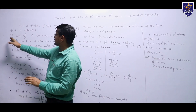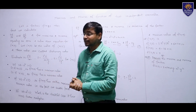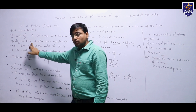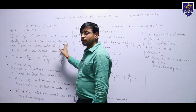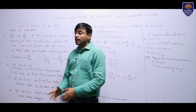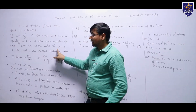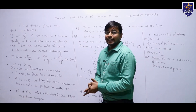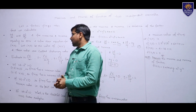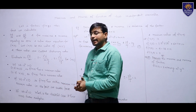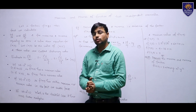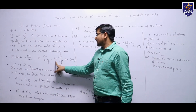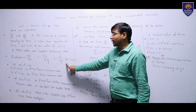First we calculate ∂f/∂x and ∂f/∂y, and for maxima and minima we equate these to zero and solve the equations for x and y. Let (a, b) be the values of (x, y); these values are called stationary values. Second, we evaluate r = ∂²f/∂x², s = ∂²f/∂x∂y, and t = ∂²f/∂y².